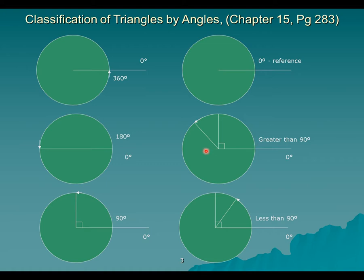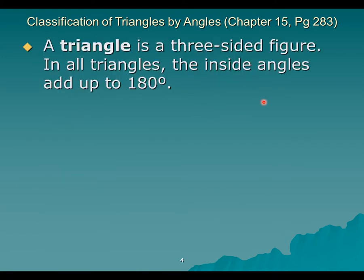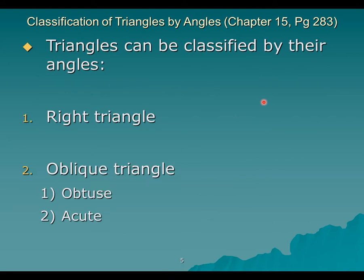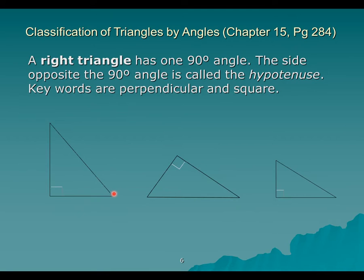Triangles can be classified by angles because there is always an angle with a specific property. A triangle has three sides and three angles. Here we have classification by angles — the right angle triangle has one angle of exactly 90 degrees, so the total is still 180. The other two angles sum to 90. These are right triangles because each one has at least one angle which is exactly 90 degrees.